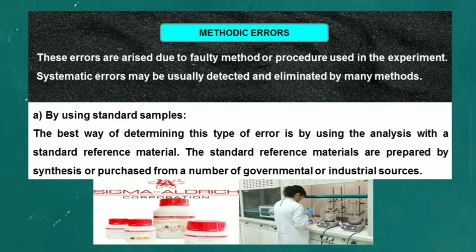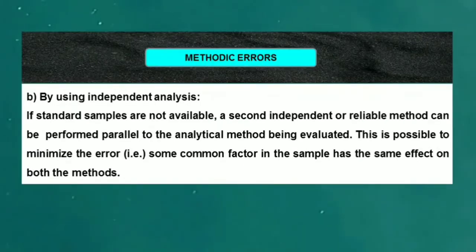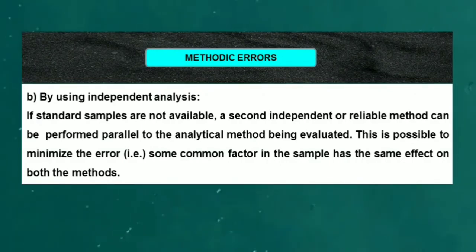Next, by using independent analysis: If standard samples are not available, a second independent or reliable method can be performed parallel to the analytical method being evaluated. This is possible to minimize the error, that is, some common factor in the sample has the same effect on both the methods, so you can reduce the methodic errors by doing independent analysis.